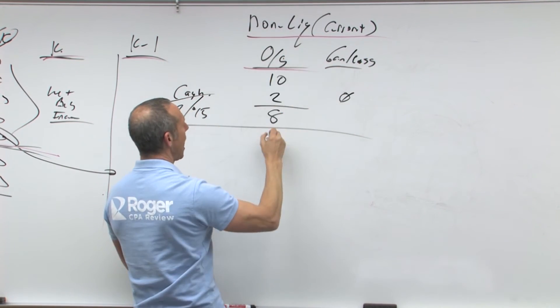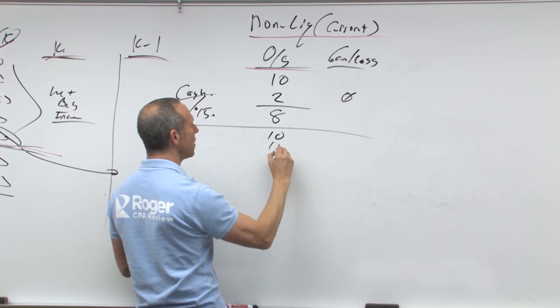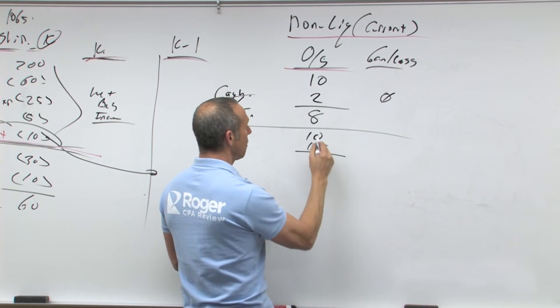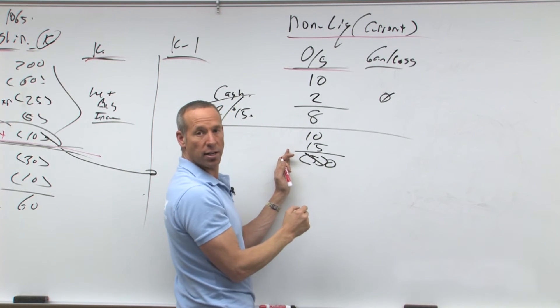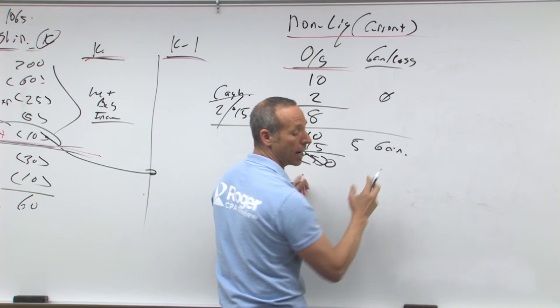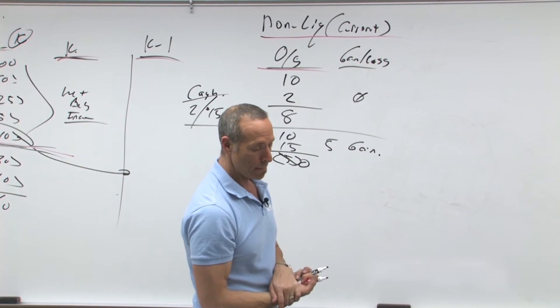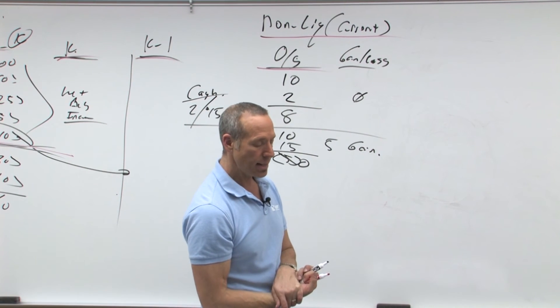Let's do the second one, cash. I have an outside basis of $10, they're giving me $15. That means remember, this can't go negative, right? So it goes to zero, I have a $5 gain and that would be a capital gain.